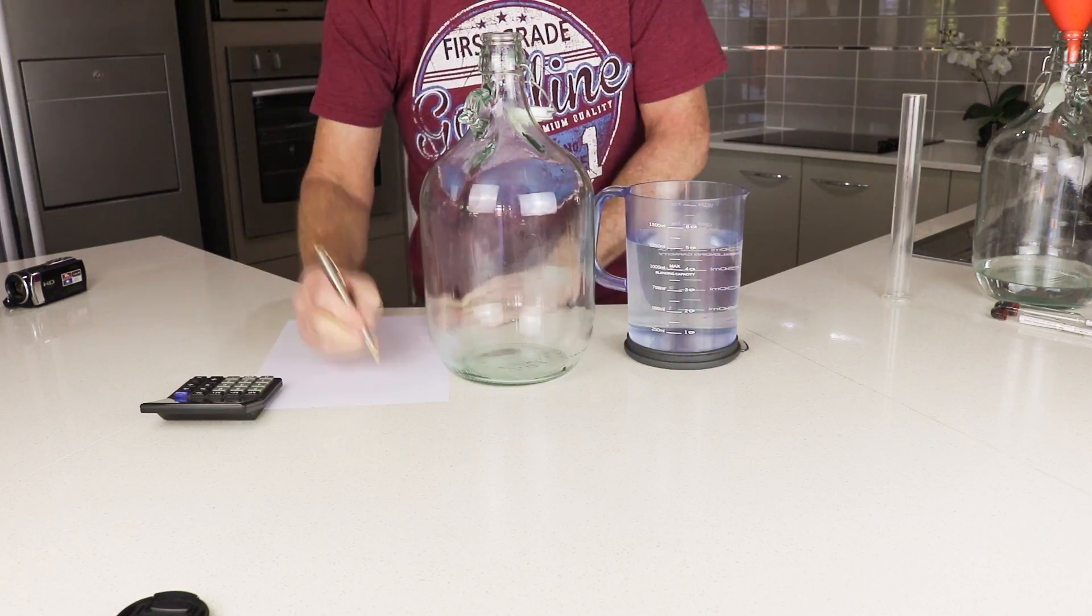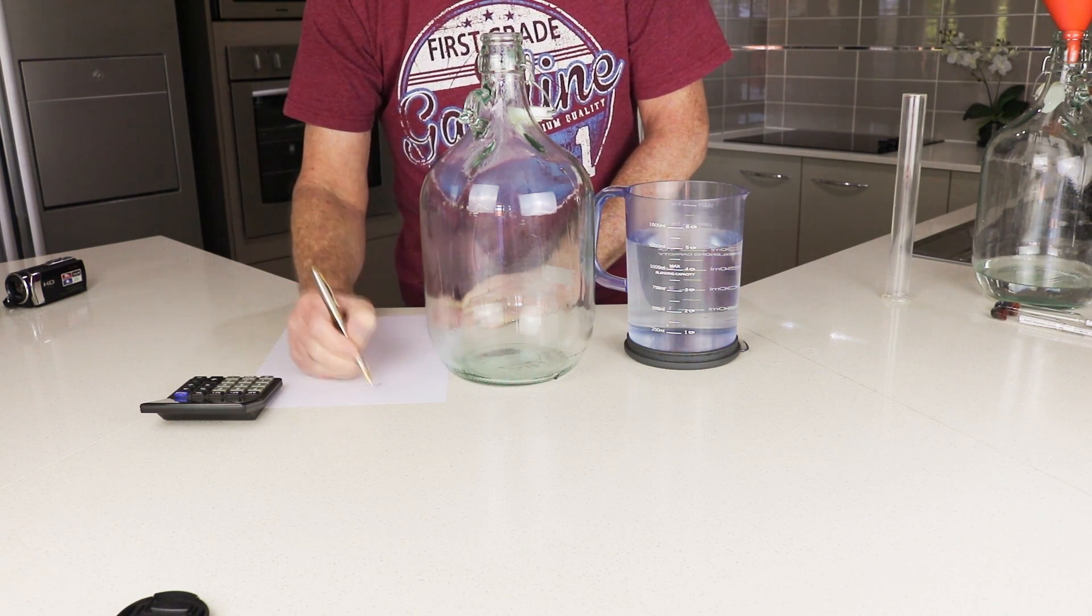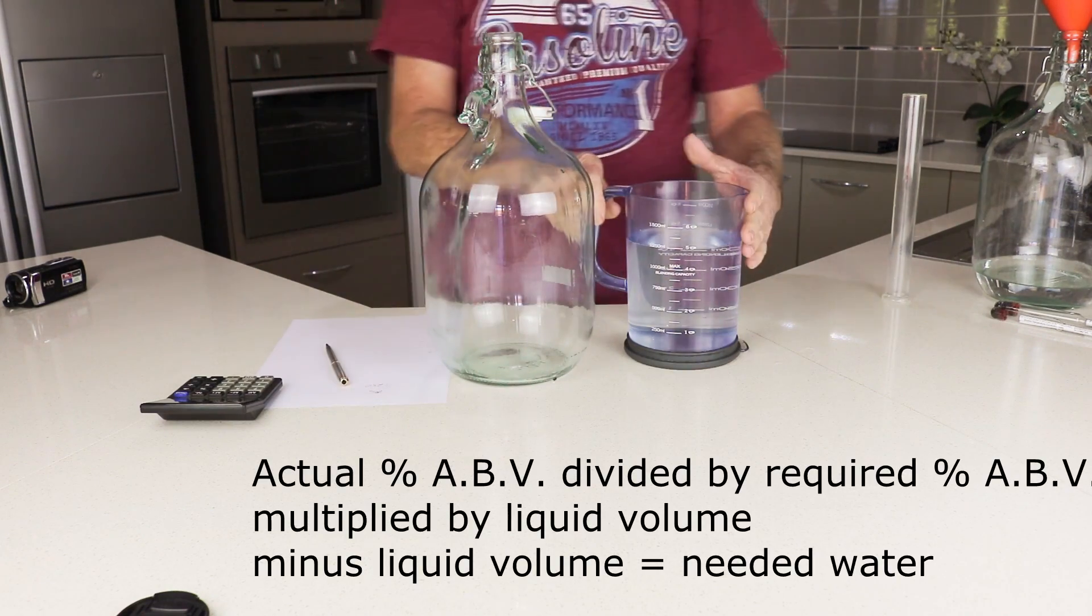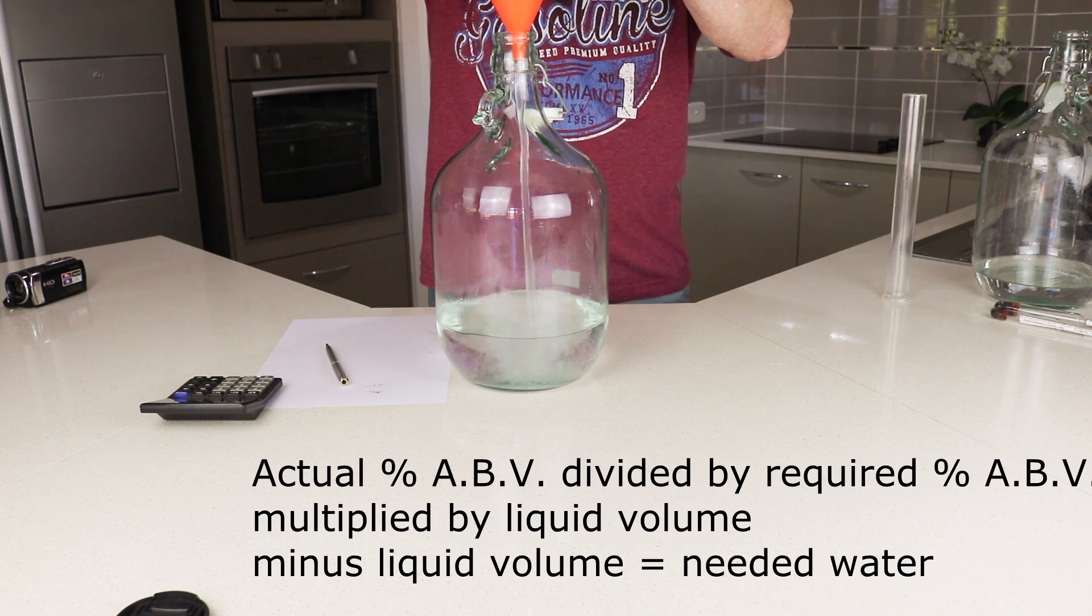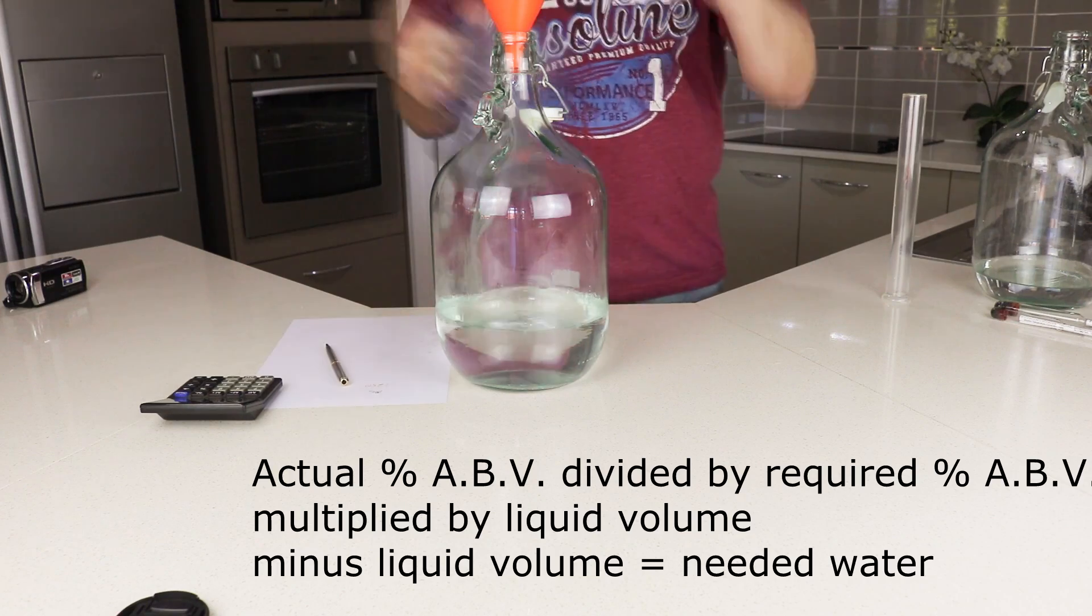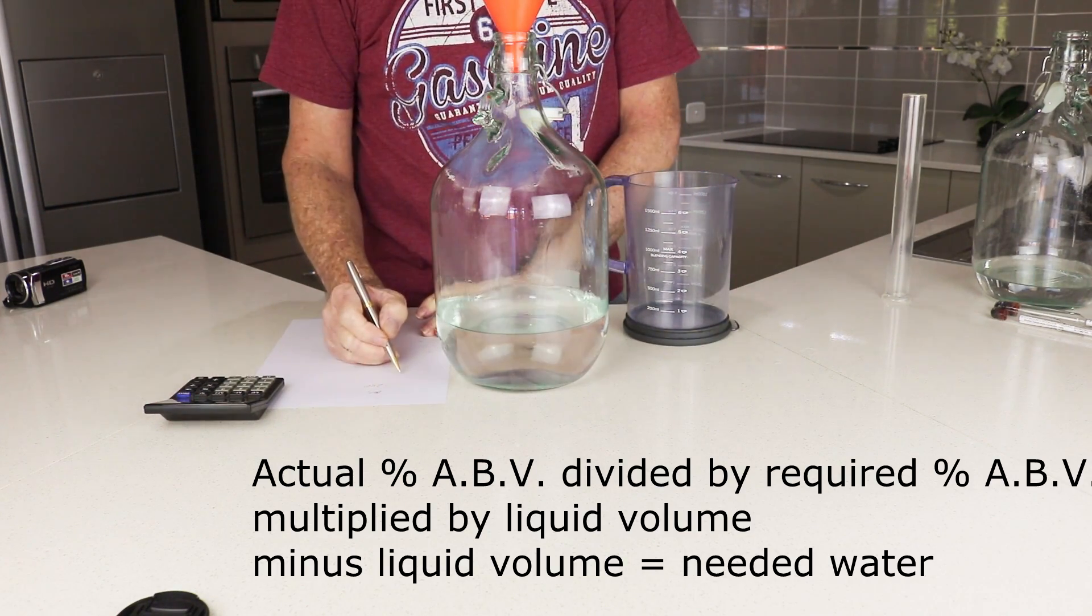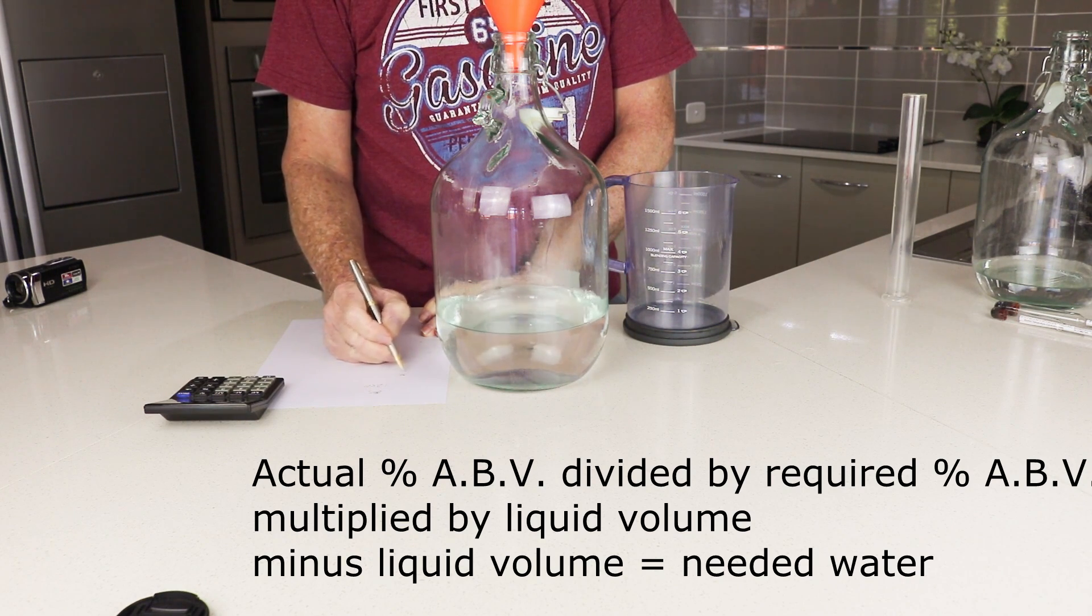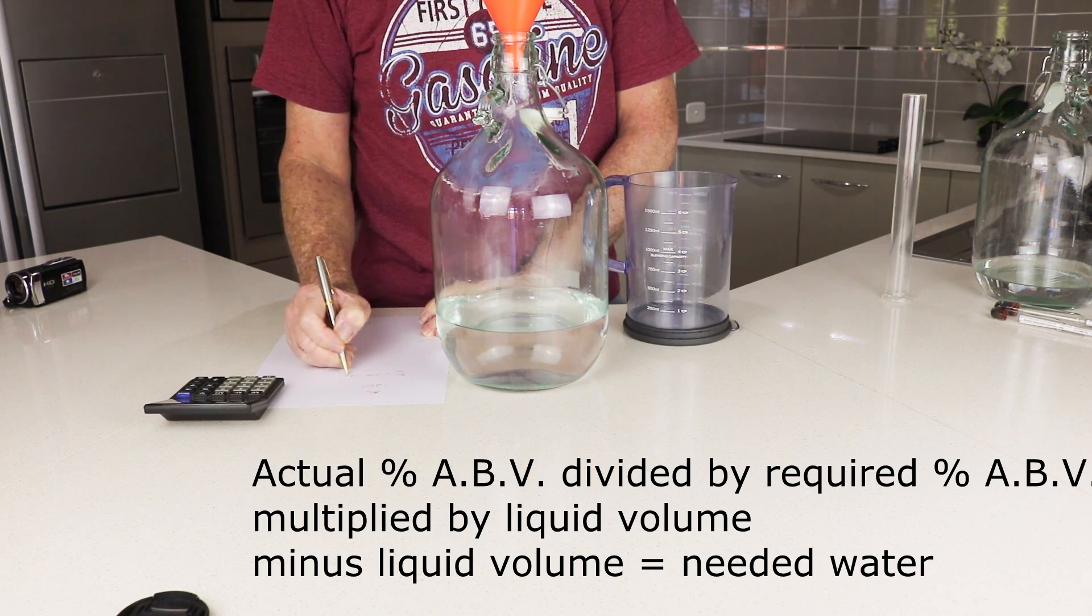We want it to come down to 40%, so we have to record this as the first part of the sum. We know the volume of the liquid is 1.250 liters, so now we can apply this formula: actual alcohol by volume divided by required alcohol by volume, multiplied by the liquid volume, minus the liquid volume equals how much water we need to bring it down to 40%.